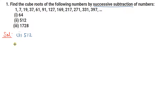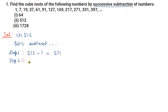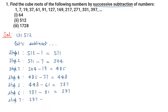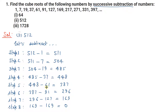Now let us solve for 512. Step 1: 512 minus 1 = 511. Step 2: 511 minus 7 = 504. Step 3: 504 minus 19 = 485. Step 4: 485 minus 37 = 448. Step 5: 448 minus 61 = 387. Step 6: 387 minus 91 = 296.